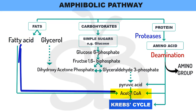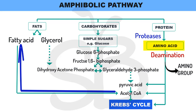At the same time, the respiratory pathway intermediates can be used to produce fatty acids and amino acids. The pathway can be withdrawn from to produce fatty acids. In plants and animals, pyruvic acid can be converted back to amino acids. So the respiration process is both a breaking down process and a building up process.